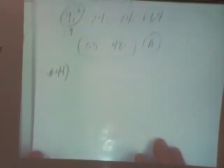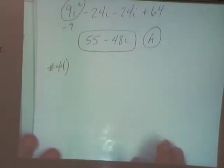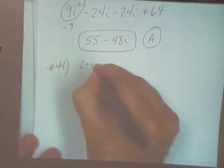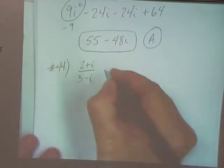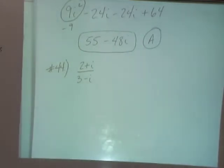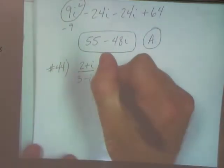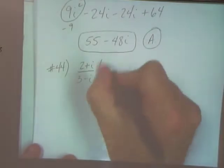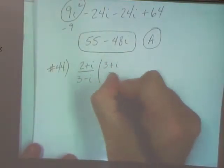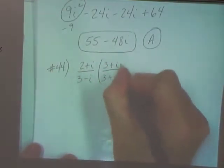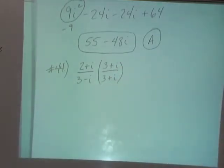All right, 44. All right, so you can't have an I in the denominator. So I'm going to multiply this by its conjugate pair. Three plus I. Three plus I.